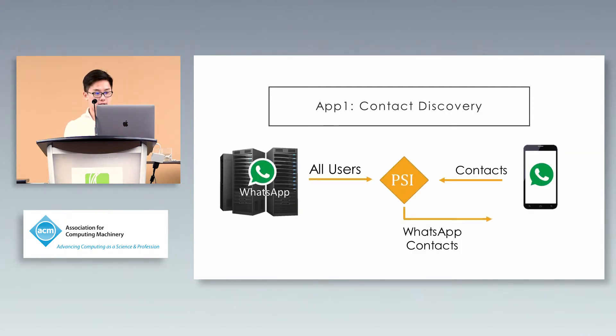In contact discovery, a user is registered to a messaging app like WhatsApp and wishes to ask the server who in their contact list is also registered, so they can directly talk to them. But they don't want to reveal all their contacts to the server. They can run private set intersection with the server and get all the IDs who are registered and in their contact list.